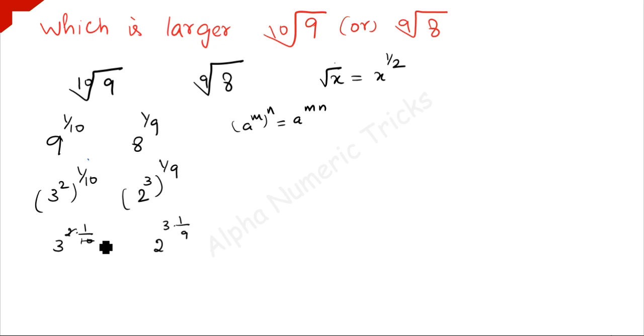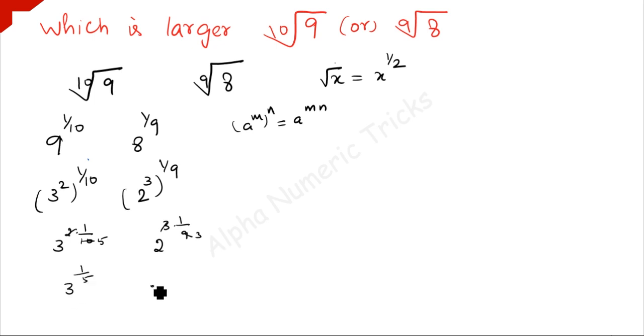Simplifying: 2 times 1/10 gives 1/5, and 3 times 1/9 gives 1/3. So we have 3 to the power 1/5 and 2 to the power 1/3.